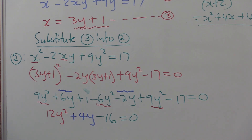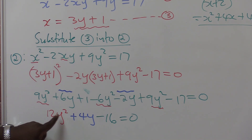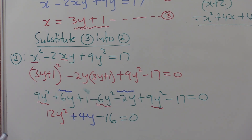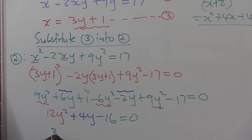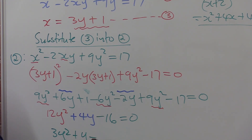What do we do at this stage? We go to factorization. The first thing when factorizing is to look for a common factor — you don't calculate it, you open your eyes and look. We've got 12, 4, and 16 — the common factor is 4. Dividing everything by 4: 12 divided by 4 is 3, so we get 3y squared plus y minus 4 equals zero. Now it's simpler.